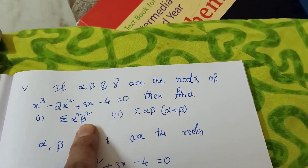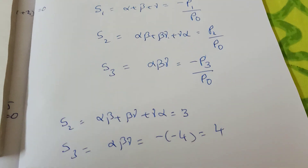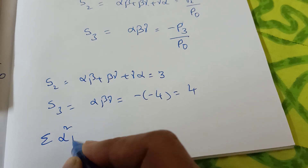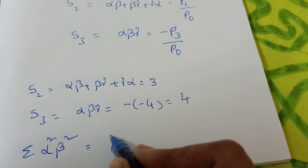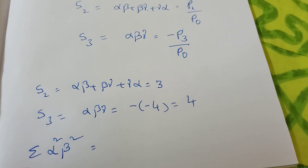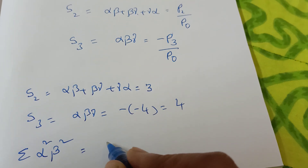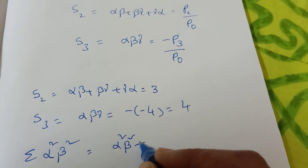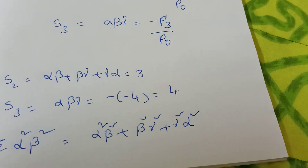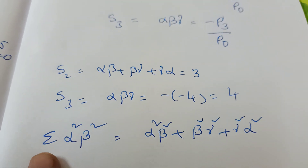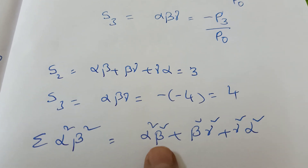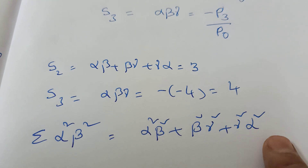Now, what is the question? See — Σα²β². Sigma Alpha Square Beta Square. Then write it as: Alpha²·Beta² plus Beta²·Gamma² plus Gamma²·Alpha². You can write Alpha·Beta whole square, Beta·Gamma whole square, Gamma·Alpha whole square — that means sum of the squares of those products, so add them all: Alpha²·Beta² plus Beta²·Gamma² plus Gamma²·Alpha².